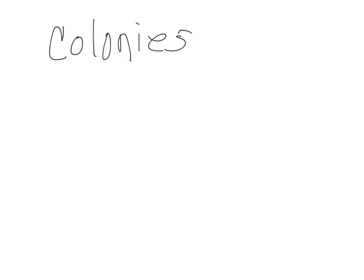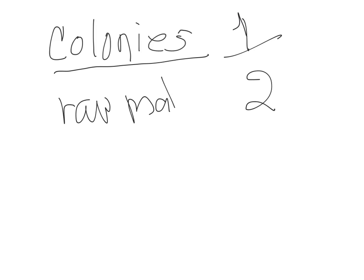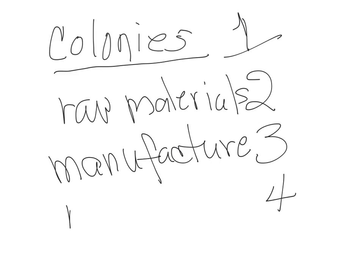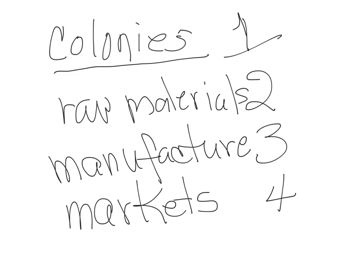So what makes up this mercantile system? First, we have colonies. Second, we have raw materials. Third, we have manufacturing — that's the process of taking raw material like timber and turning it into furniture. And fourth, we have markets — the places you take what you've made and sell it. All of these go together to make a functional mercantile system.